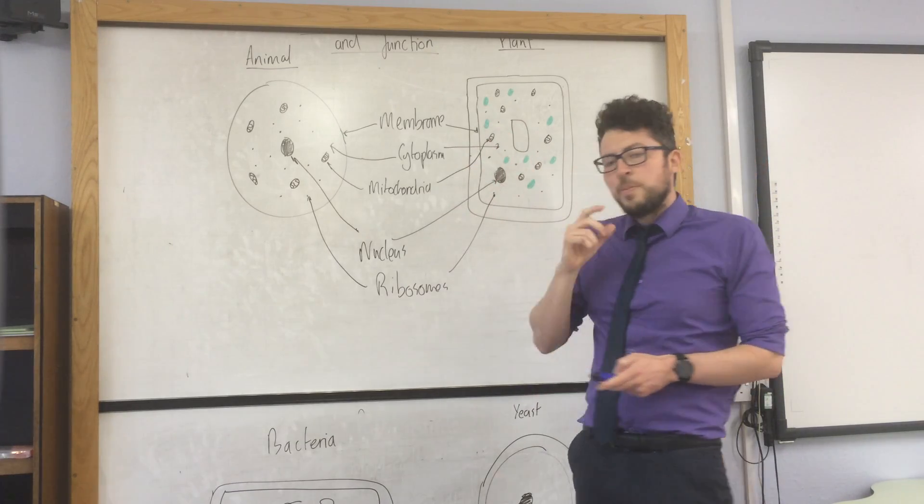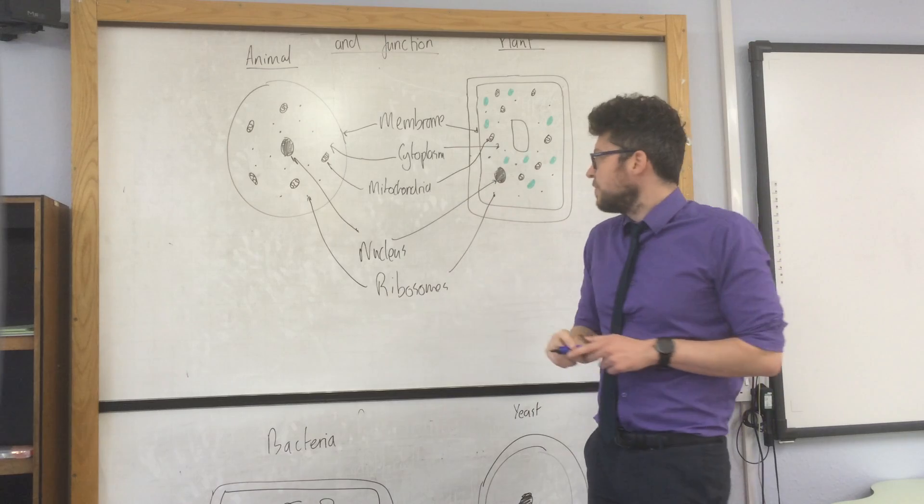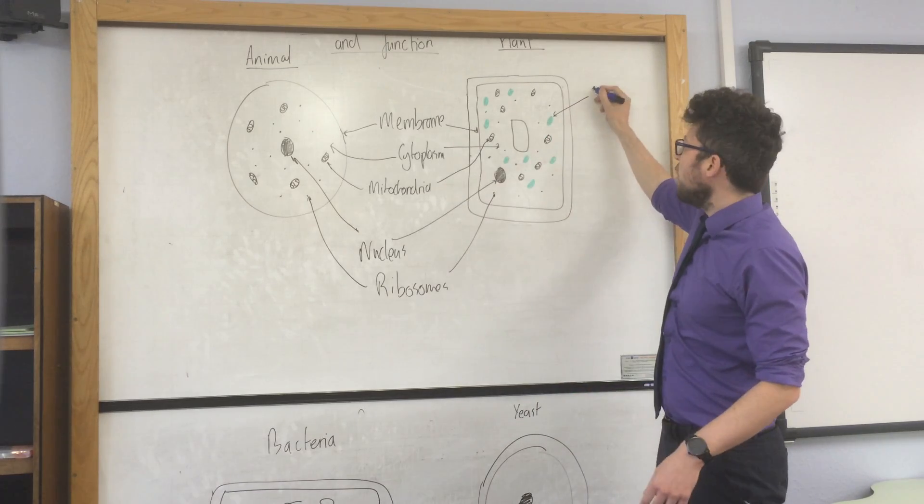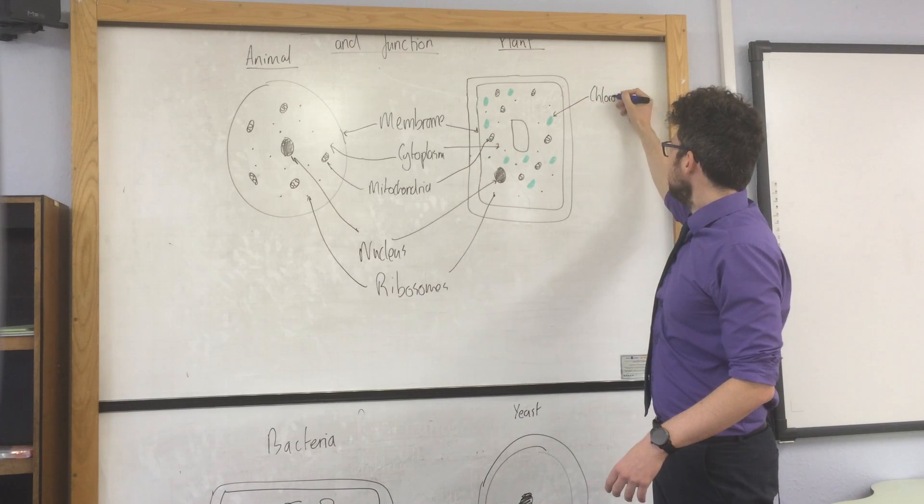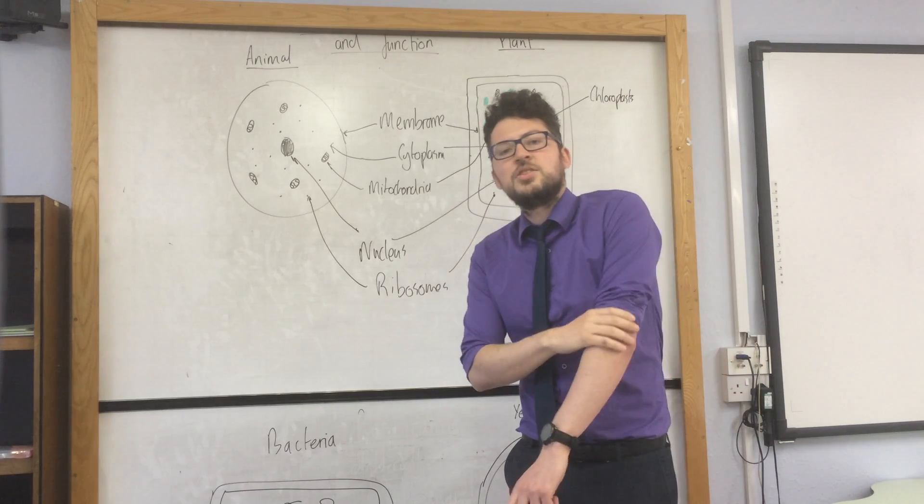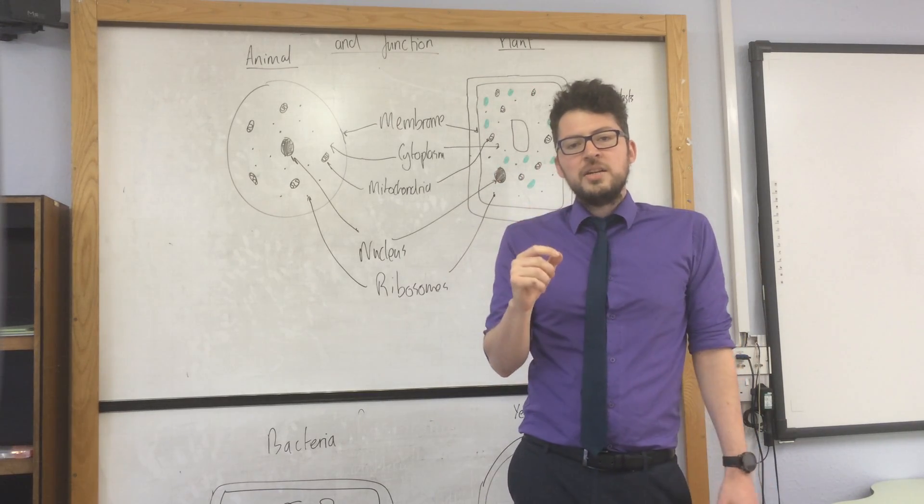Plant cells have a couple of extra ones that animal cells don't. Firstly, they have chloroplasts, which are these green blobs. The function of chloroplasts is to absorb light energy for photosynthesis.